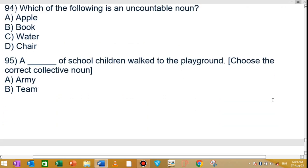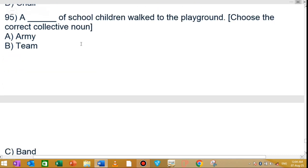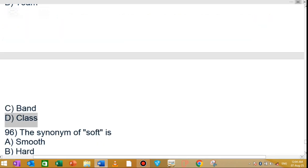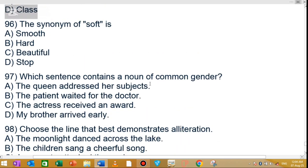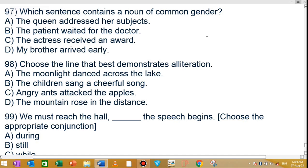MCQ number 93: Your composition is the worst of all. This is the superlative degree. Option D is the correct answer. MCQ number 94: Which of the following is an uncountable noun?